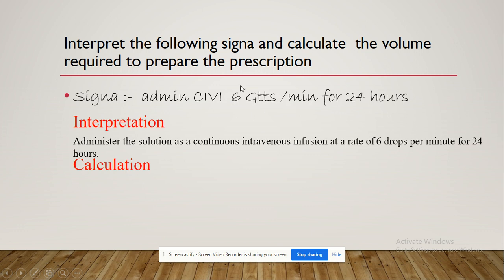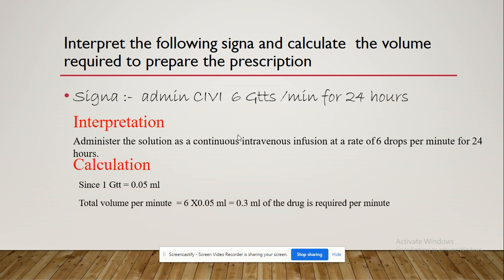يعني ننطي المحلول بالوريد بمعدل 6 قطرات بالدقيقة لمدة 24 ساعة. نريد نحسب الكمية اللي نحتاجها باليوم الواحد. عدنا المعدل 6 قطرات بالدقيقة، فلازم نحسب الحجم بالدقيقة. 1 drop equals 0.05 mL. فبالدقيقة الوحدة نحتاج: 6 × 0.05 = 0.3 mL. يعني الحجم اللي نحتاجه هو 0.3 mL per minute.